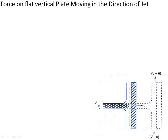This is the diagram where we can see a jet of water striking a flat vertical plate. This is the initial position of the flat vertical plate and the dotted lines represent the final position. This figure shows a jet of water striking a flat vertical plate moving with a uniform velocity away from the jet.